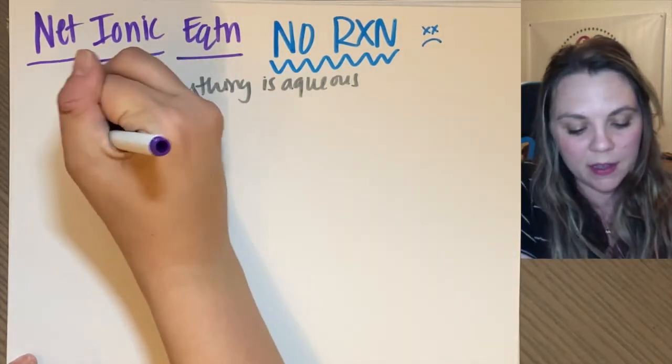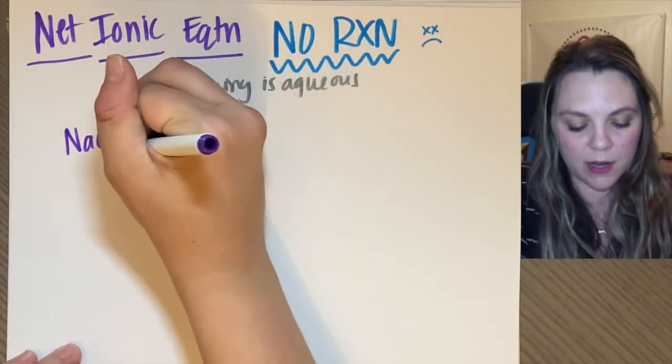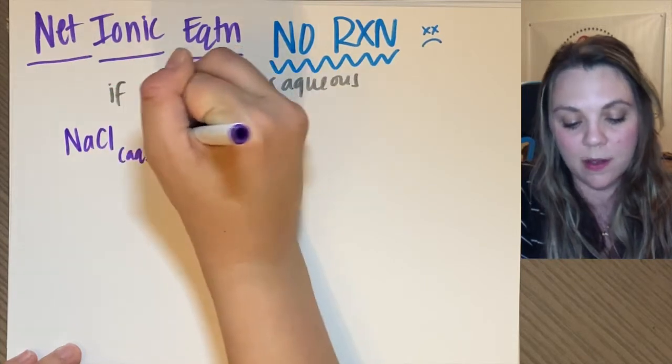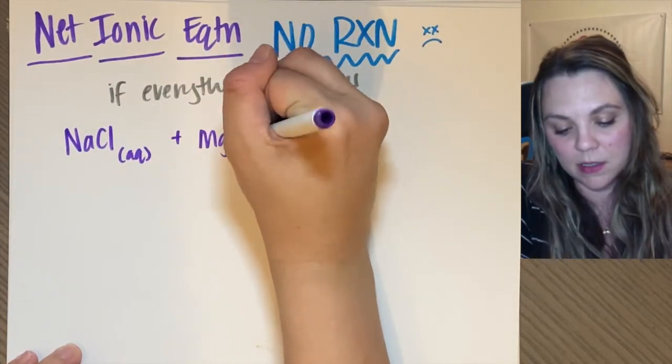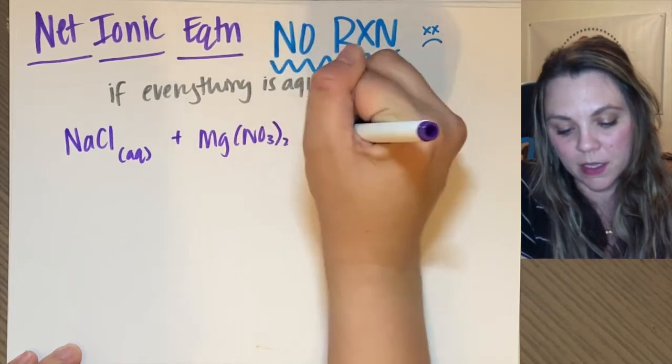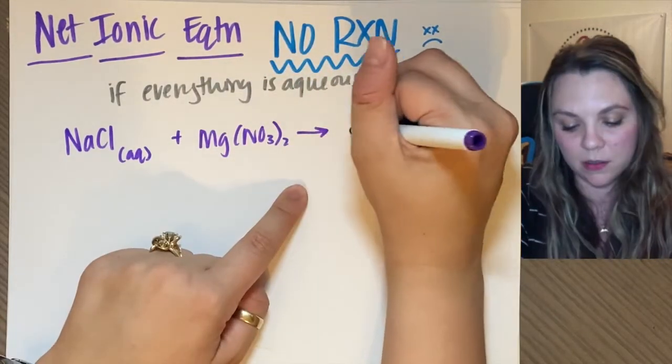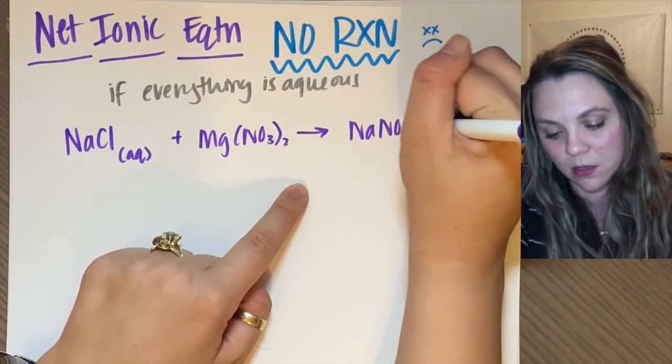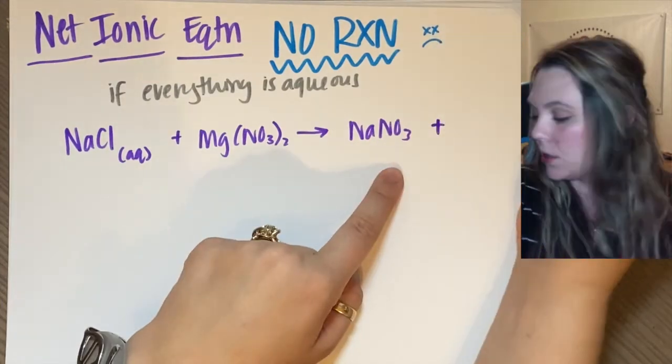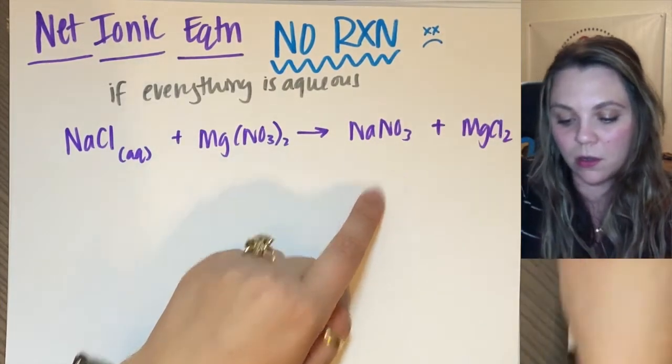If I had sodium chloride, which is aqueous, plus magnesium nitrate, reacting to make sodium nitrate and magnesium chloride.